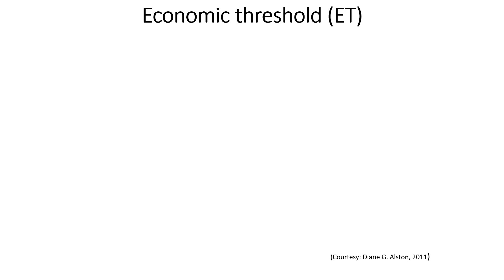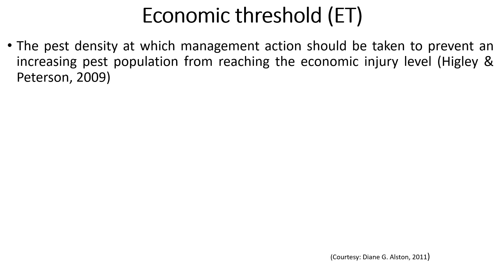Economic Threshold helps to determine whether to classify an insect as a pest or not, which in turn can help minimize cost, maintain or increase profit, and reduce contamination to food and the environment. ET is the pest density at which management actions should be taken to prevent an increasing pest population from reaching the Economic Injury Level. Sometimes it is referred to as the action threshold.